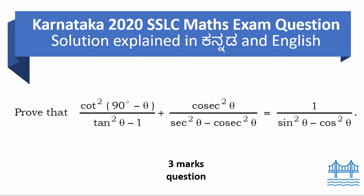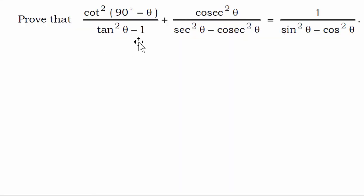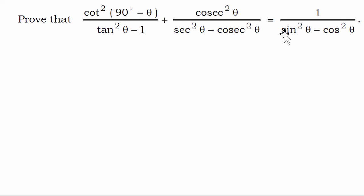Let us look at the question. The question has left hand side equals right hand side — we have to prove that left hand side equals right hand side. We have to add the left hand side terms and we have to get the right hand side.